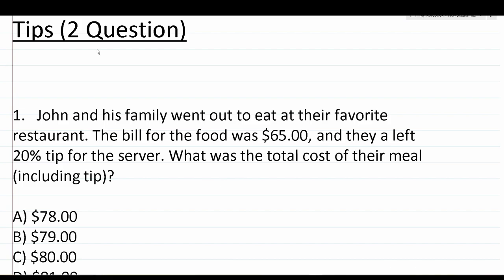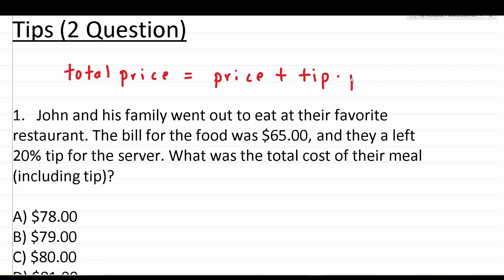If you can calculate discounts and tax, you should have no issues calculating tips. We're going to find the total price, which equals the price plus the tip amount times the price. The tip amount is expressed in decimal form. That's all we have to do to figure out the total price of something that includes the tip amount.